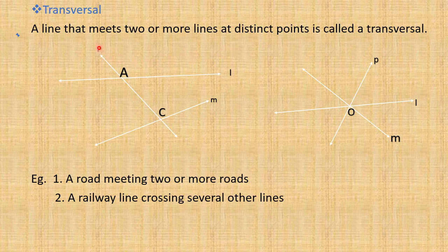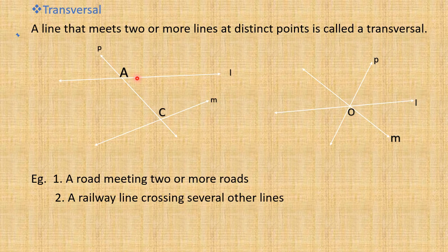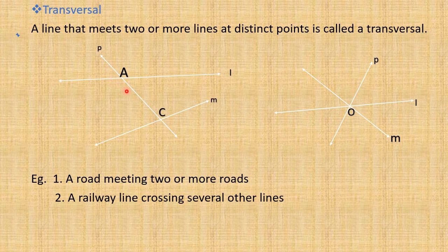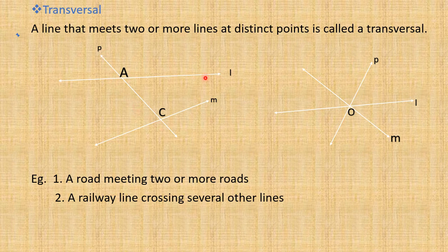Here we have three lines in this figure: P, L, and M. We use small letters for giving names to the lines, or we can use two capital letters also. Line P is meeting line L — intersecting line L — at point A, and it again meets another line, line M. So, how many lines does it meet? It meets two lines. So we can say line P is a transversal of these two lines.